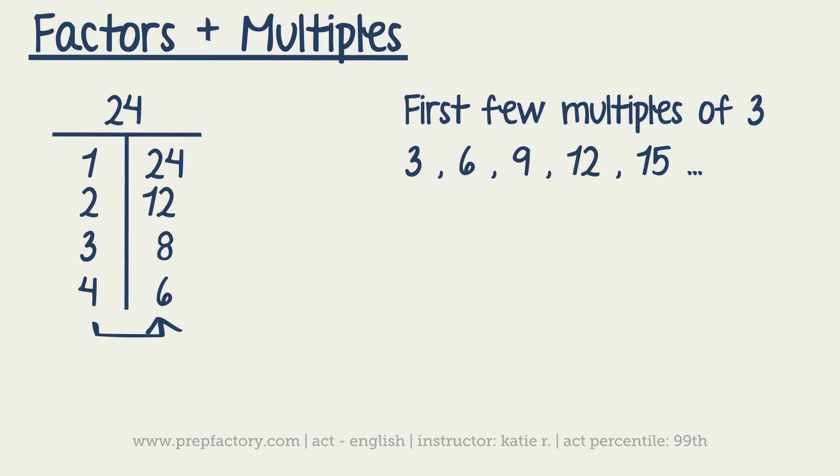The big thing to remember is that the number itself is a multiple and a factor of itself. So 24 is a factor of 24. 3 is a multiple of 3. Always remember that, because they love to ask you questions where if you forget that little piece of information, you have a hard time answering it correctly.